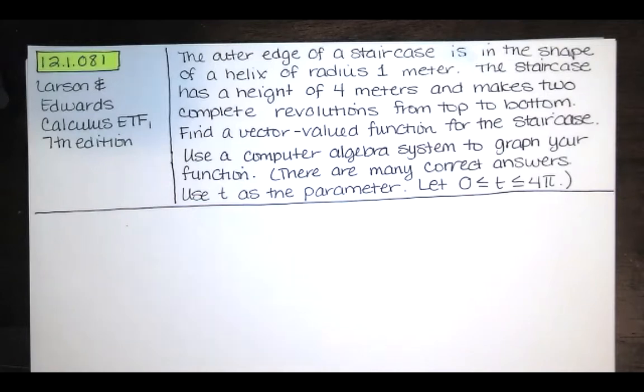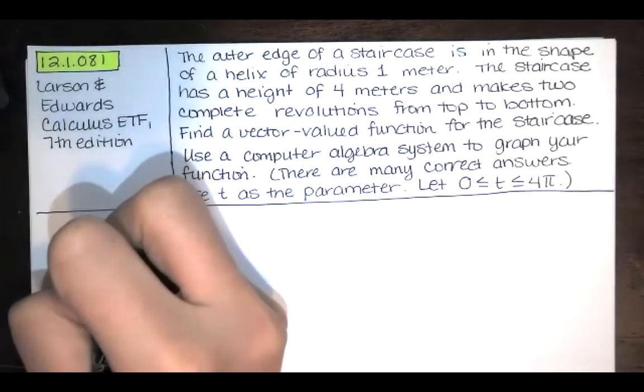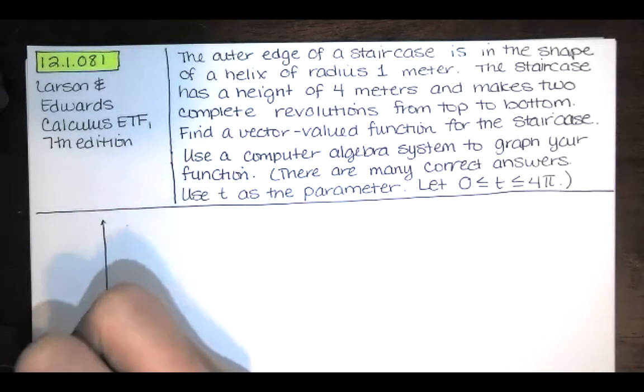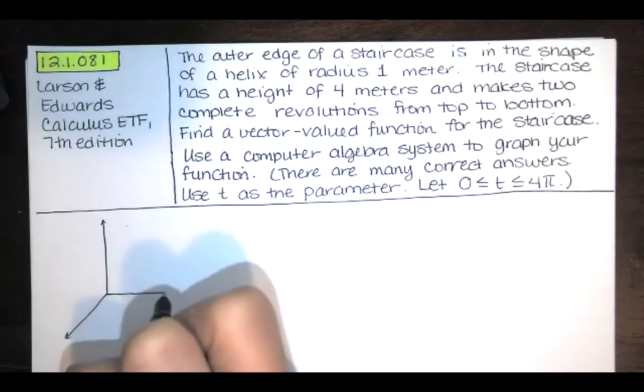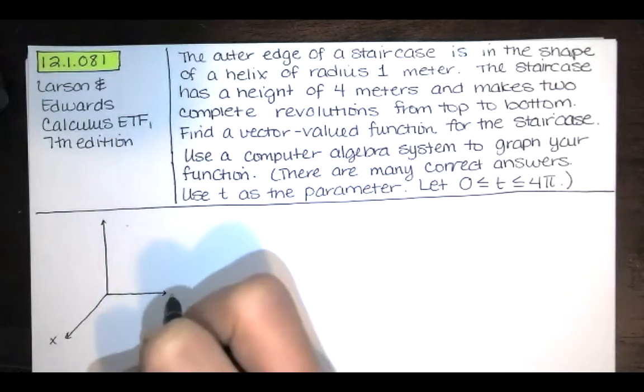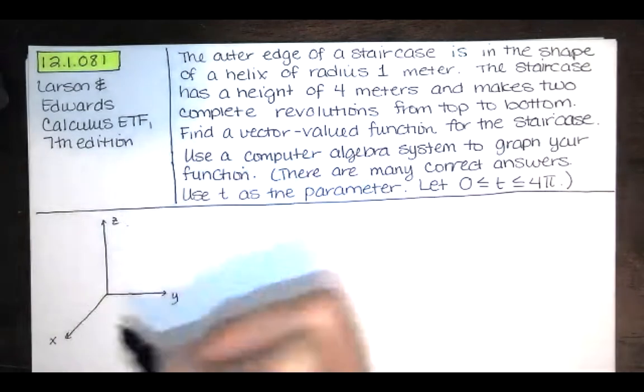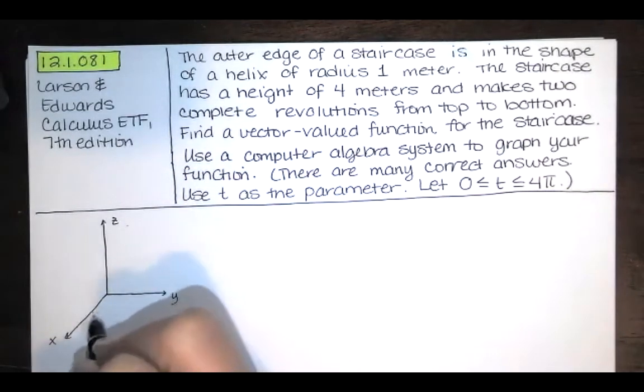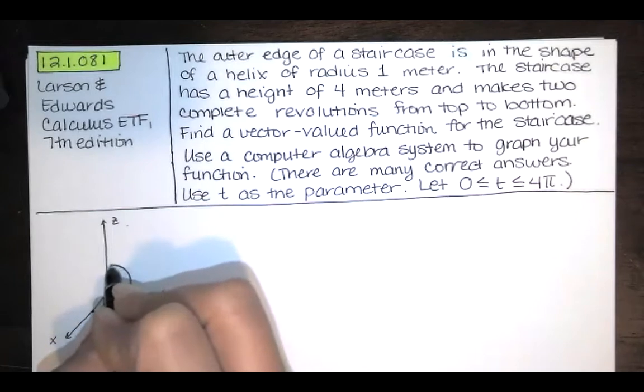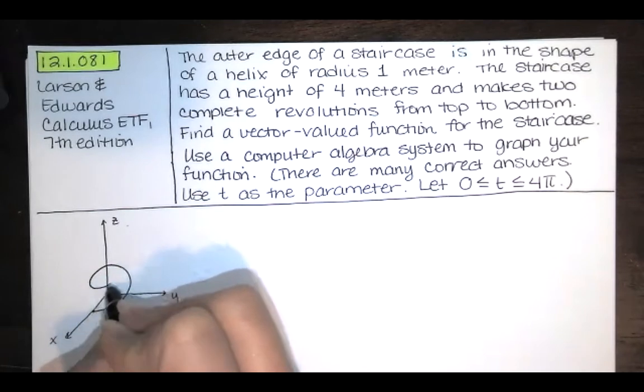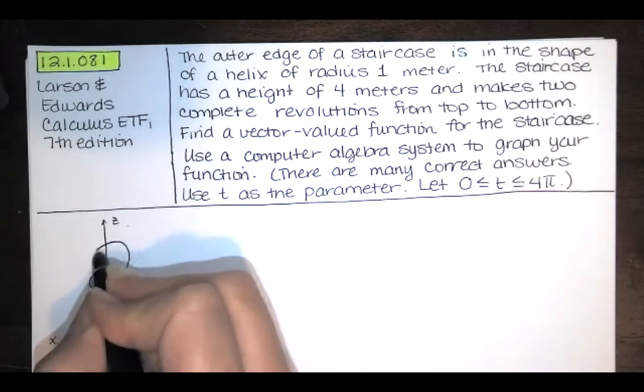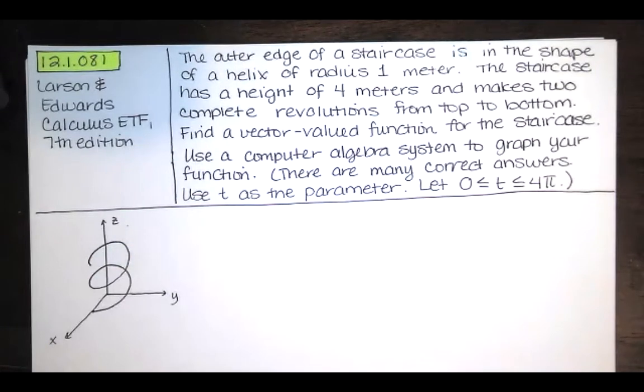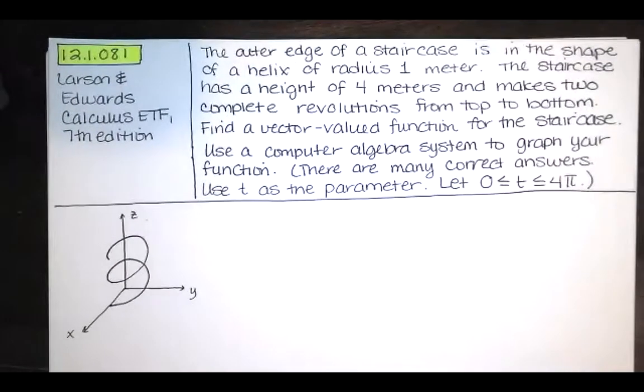So a couple of things. I'm just going to start graphing a helix over here. This is not going to be the right helix, but this is the idea. Let's say we start over here at this location, and then we go around once, and then we go around twice, and then we stop, and then we're done. That's approximately what our helix looks like.